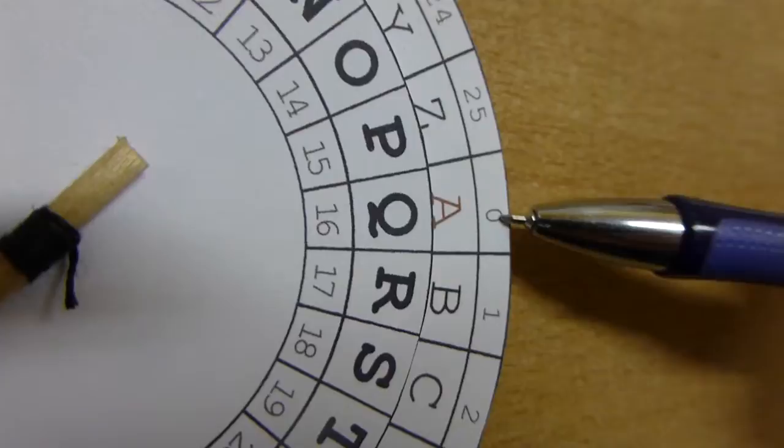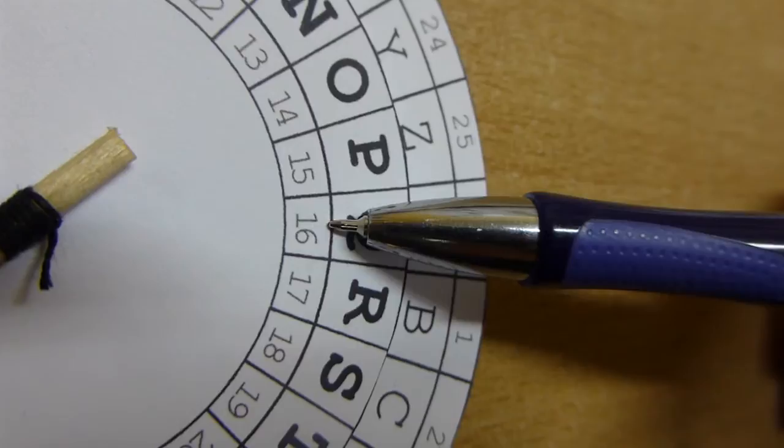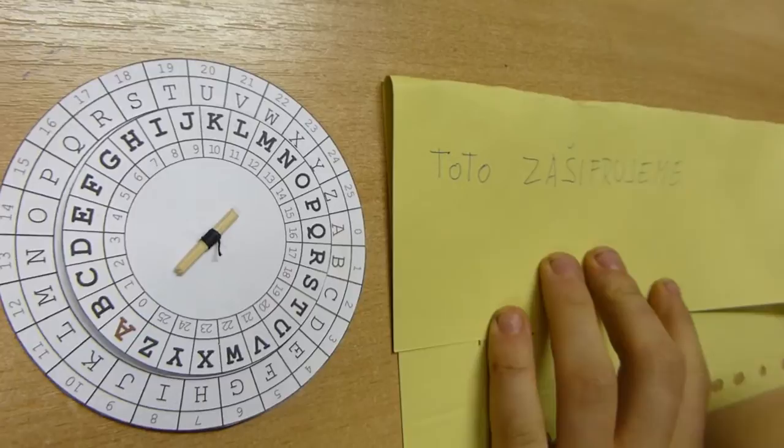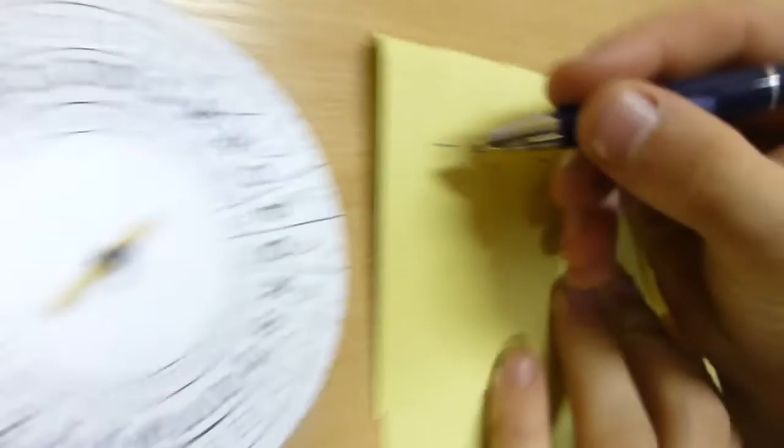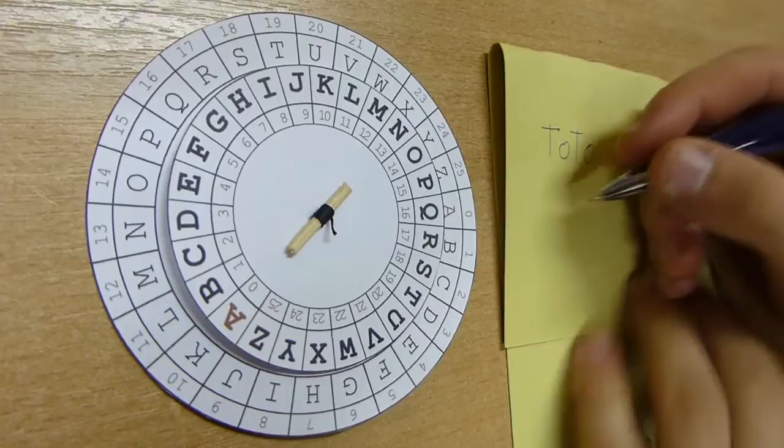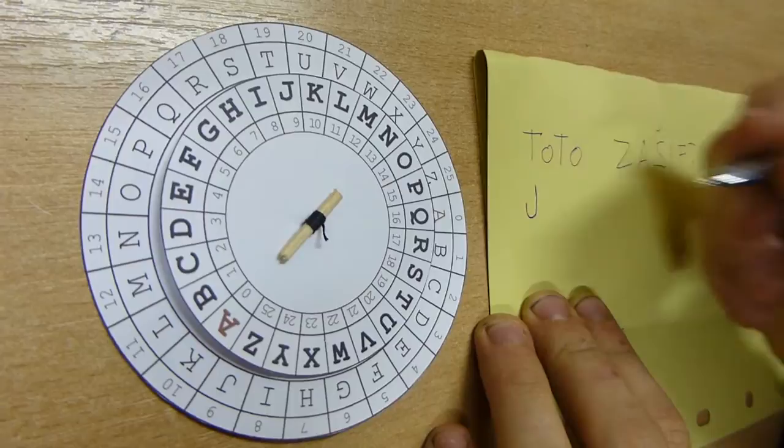Klíčem může být i číslo od 1 do 25, které pak samozřejmě znamená, o kolik znaků je šifrová abeceda vůčité otevřené posunutá. Teď se podíváme na první znak otevřené zprávy, který chceme zašifrovat. Najdeme si ho na kotouči s otevřenou abecedou a do šifrové zprávy zapíšeme znak, který se nachází u něho na šifrovém kotouči.